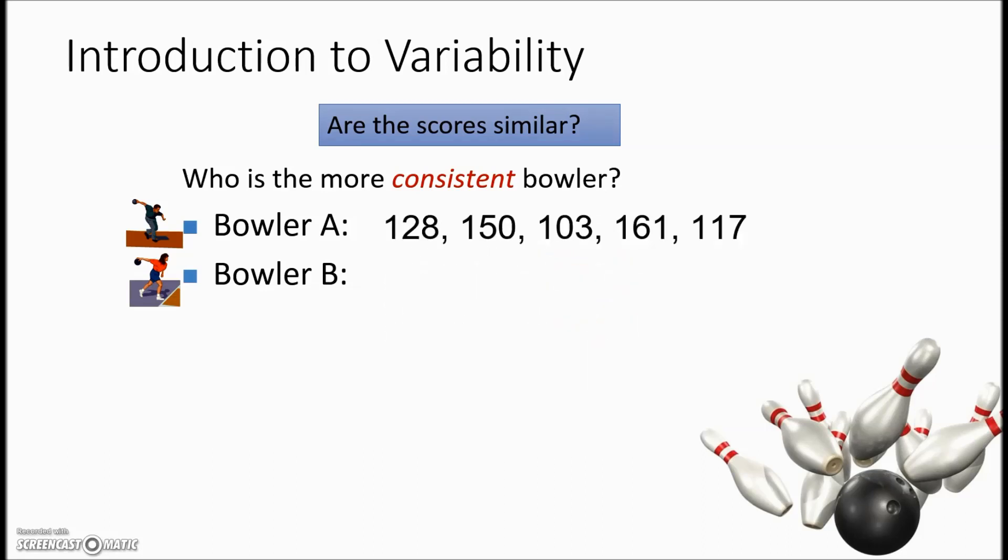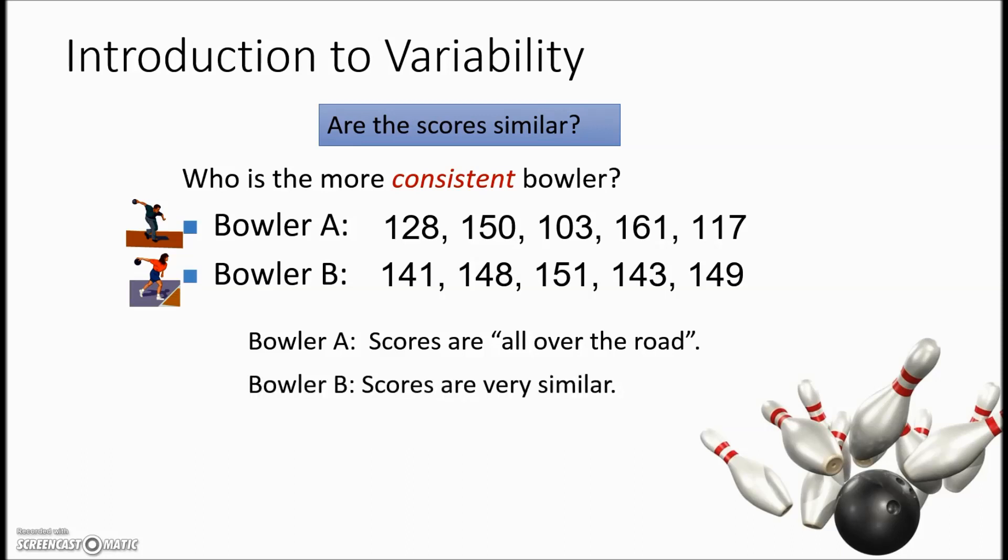So we now have that information and to answer the question who is more consistent we're looking at numbers that are similar to one another. Bowler A as you can see has poor nights and very good nights where bowler B is very consistent and similar with the scoring. So we would say bowler B is the more consistent here.